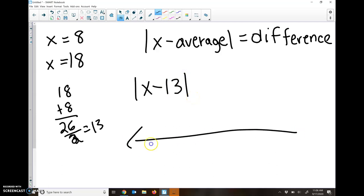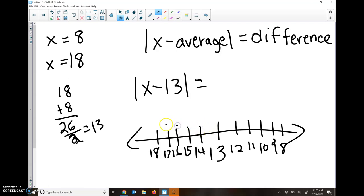Now if I'm on a number line and I'm at 13, I need to figure out how many spots it is to get to 18. And it should be the same number of spots to get to 8. And we're going to call that the difference. What is the difference between my average and the two answers? And so if we count, it's one spot, two spots, three spots, four spots, five spots to get to 18.